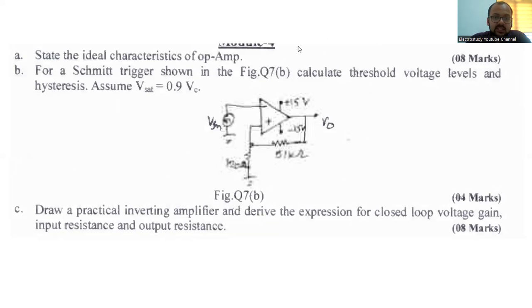7B. A Schmitt trigger you can observe. Here is the diagram of a Schmitt trigger. For a Schmitt trigger shown in figure 7B, calculate the threshold voltage and assume that V saturated voltage is equal to 0.9 percentage of VCC. The Schmitt trigger output will be actually the square pulse, a square wave. There is an inverting amplifier as you can observe. The parameters are given here.